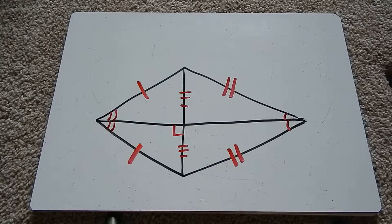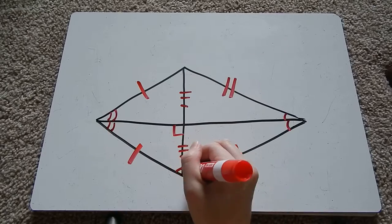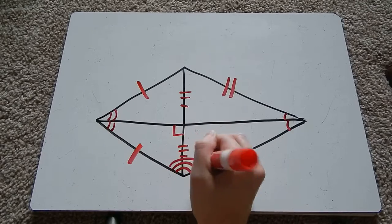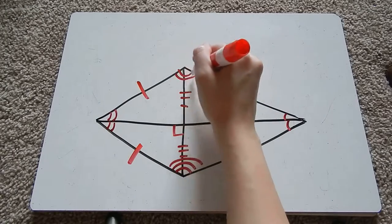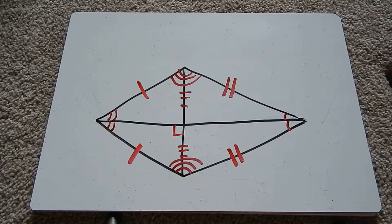Something else we know about kites is that the opposite angles here are congruent. So this angle is equal to this one. So all these things are going to keep in mind as we work a couple example problems.